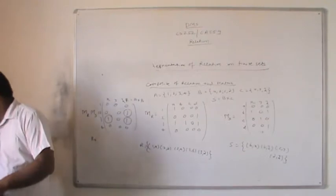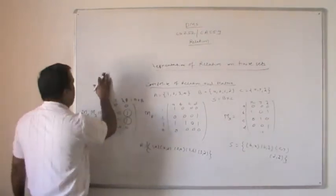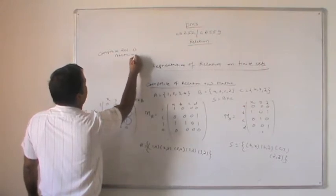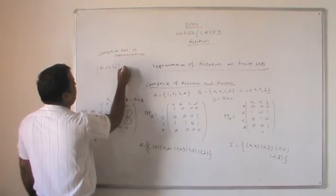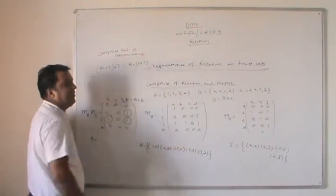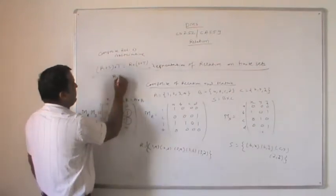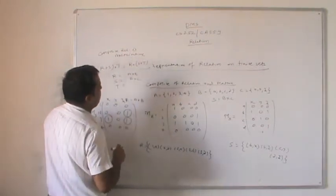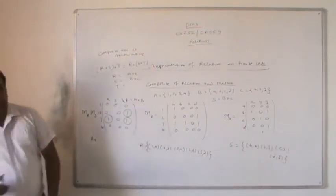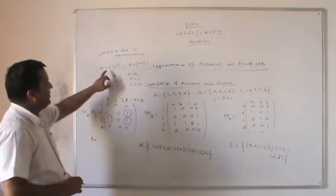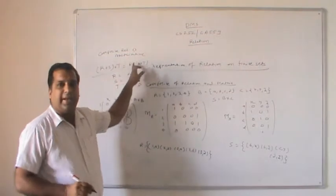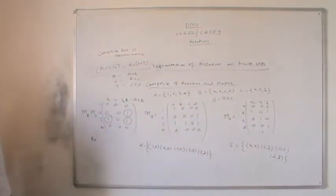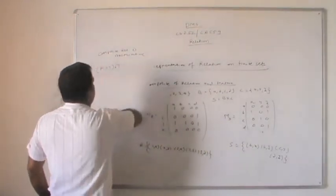The composite relation follows the property of associativity. Associative means: R composite S composite T equals R composite (S composite T), where R is a subset of A cross B, S is a subset of B cross C, and T is a subset of C cross D. So the composite relation follows the associative property.